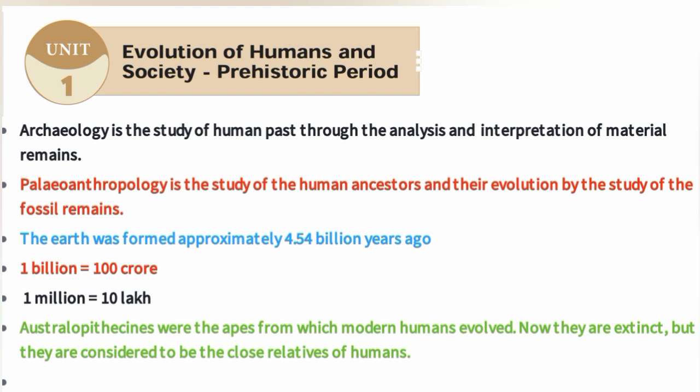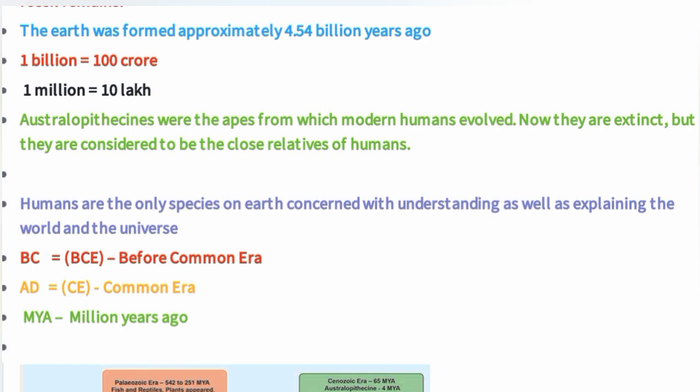Australopithecans are the apes from which modern humans evolved. They are now extinct but are close relatives of humans. Australopithecans are the only species concerned with understanding as well as explaining the world and universe.